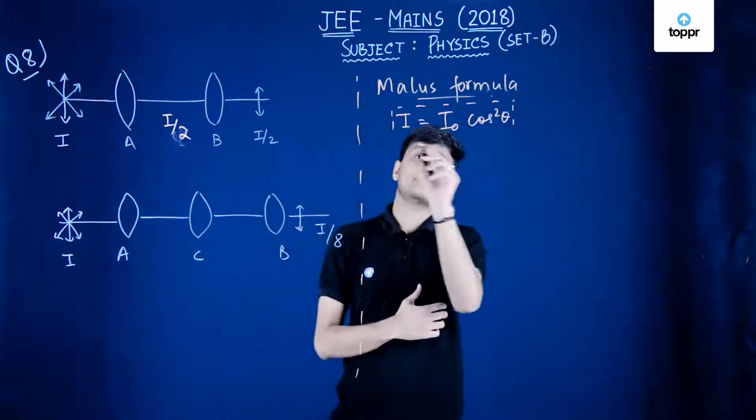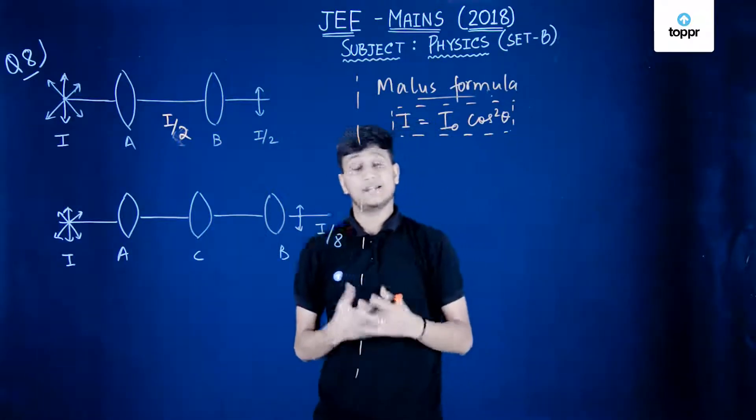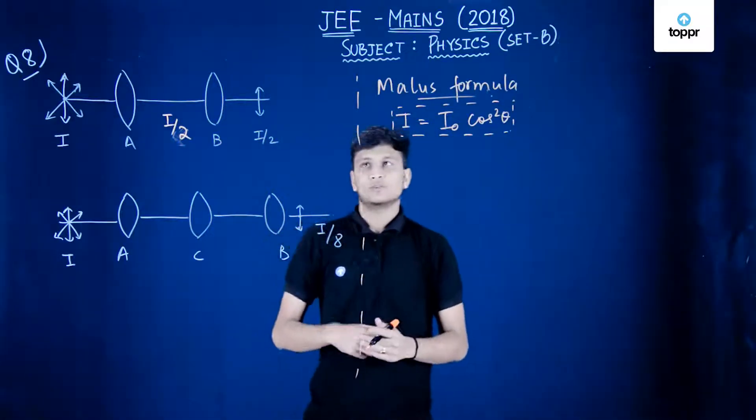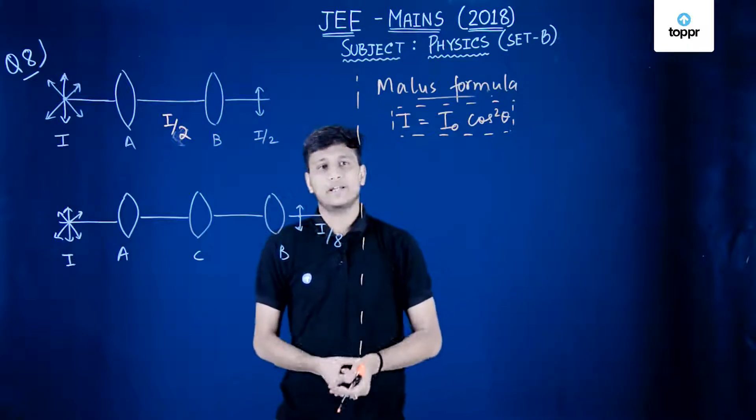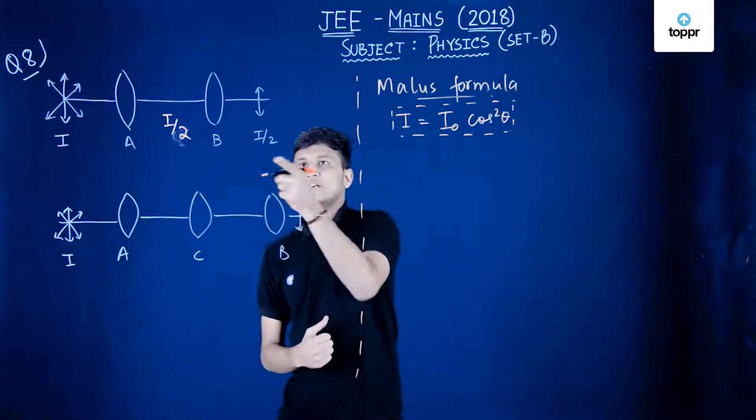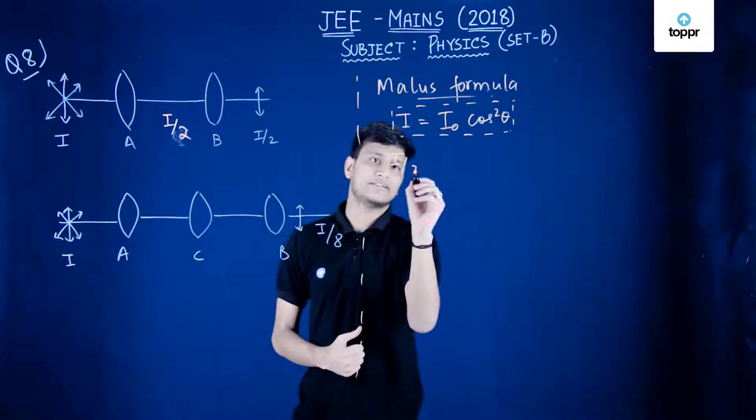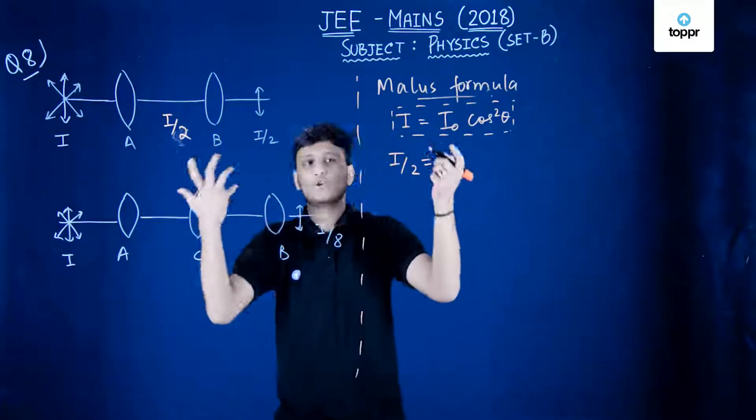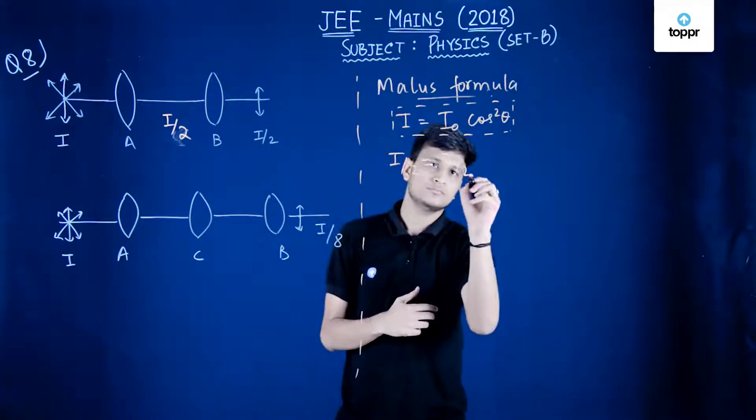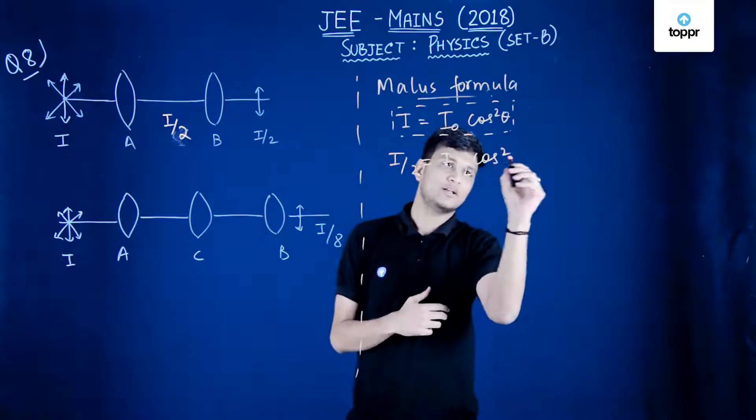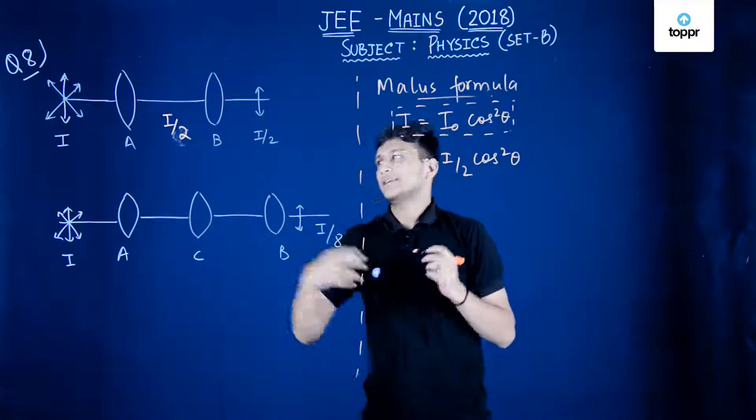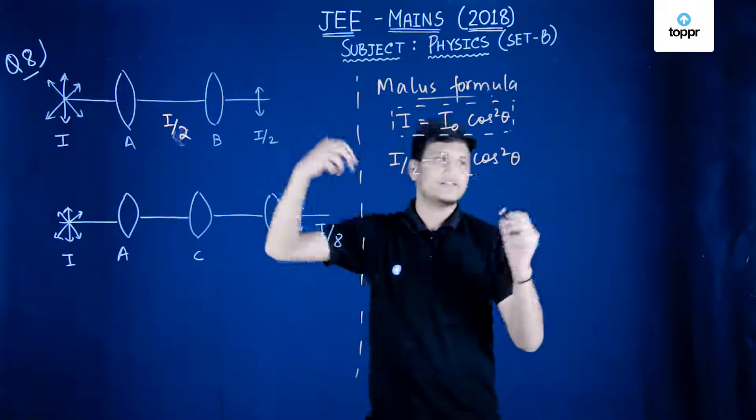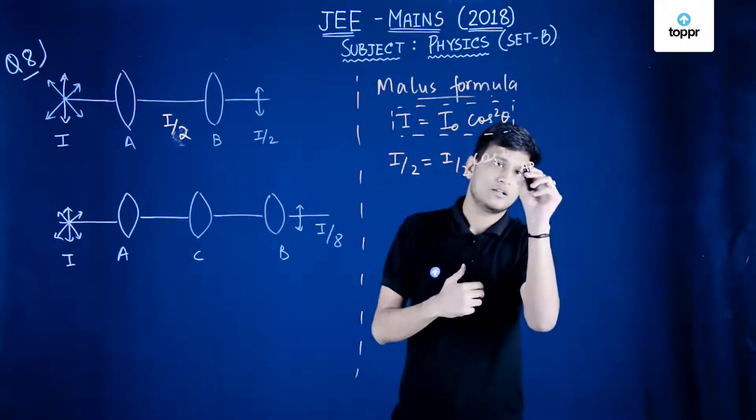This is the golden formula that we have to remember here and then only we can solve this problem. So for this when we talk about A and B, the final intensity was I by 2, the initial intensity was also I by 2, and cos square theta. Let's say that the angle between A and B is theta AB.